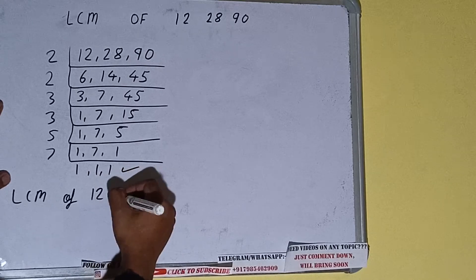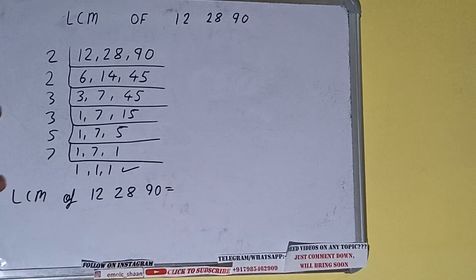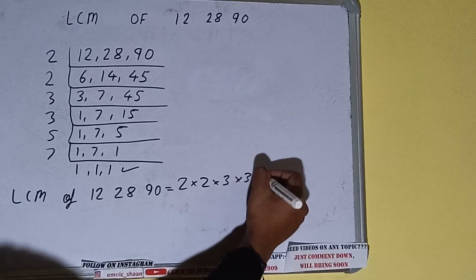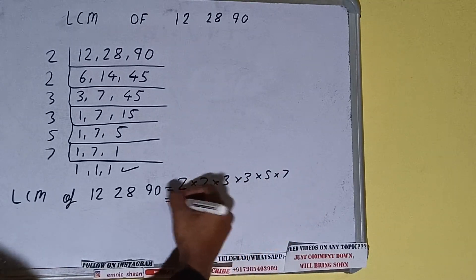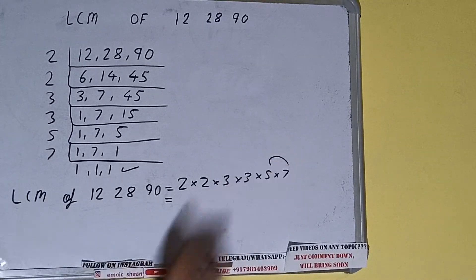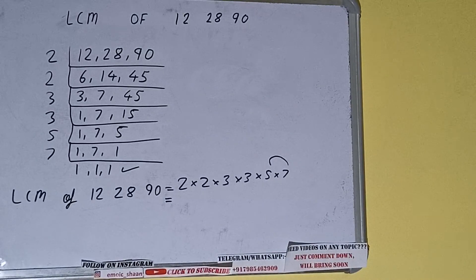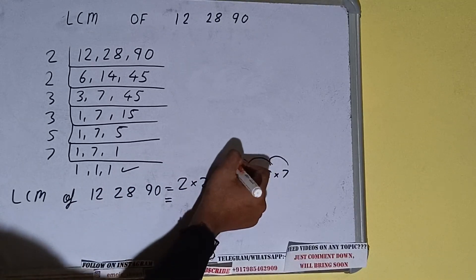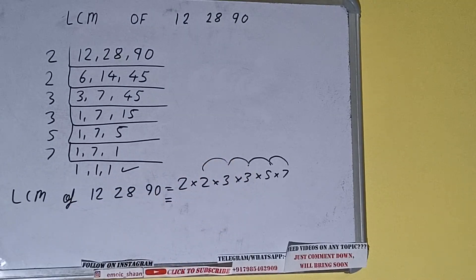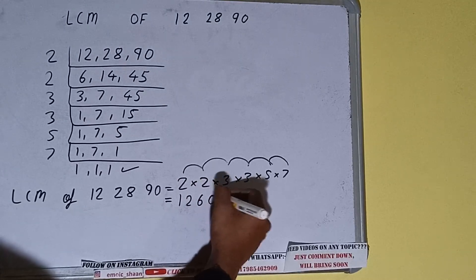The LCM of 12, 28, and 90 is equal to the product of all the divisors on the left-hand side: 2 × 2 × 3 × 3 × 5 × 7. Now when you are multiplying these numbers, be very careful because one mistake can make your answer wrong. Multiplying step by step: 5 × 7 = 35, 35 × 3 = 105, 105 × 3 = 315, 315 × 2 = 630, 630 × 2 = 1260.